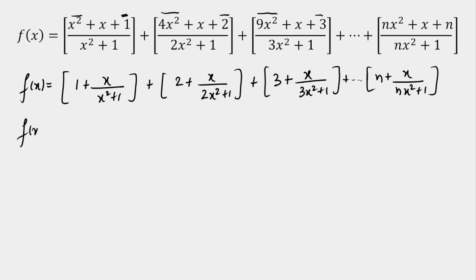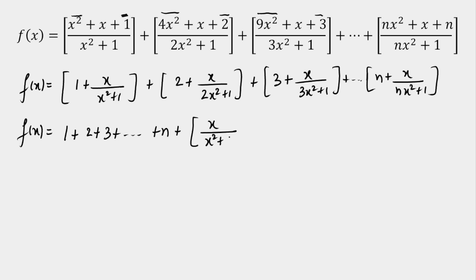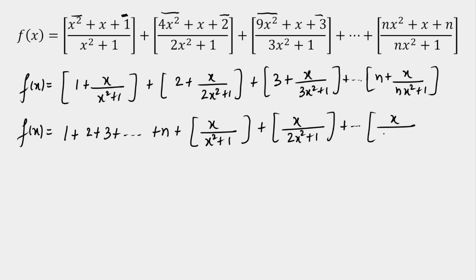Now there is a property of GIF: you can take the integer part outside. So I am going to take 1, 2, 3, and so on till n outside. That will be 1 + 2 + 3 + … + n taken outside. In the remaining n terms, the GIF parts remain. So I write all those terms as GIF(x/(x²+1)) + GIF(x/(2x²+1)) + … + GIF(x/(nx²+1)).